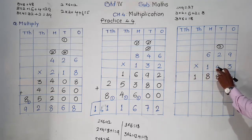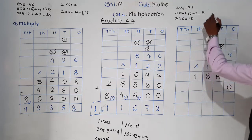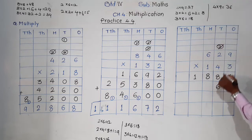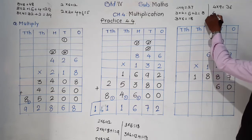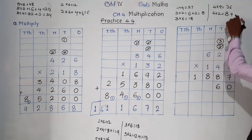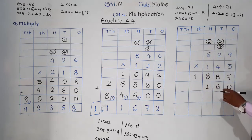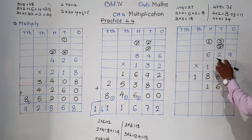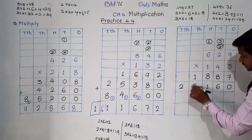Now we are going to multiply by the tens place digit, which is 4. Put 0 in the ones place. 4 nines are 36: 6 comes down, 3 is carried to the tens place. 4 twos are 8 plus carry 3 is 11: 1 comes here, 1 is carried to the hundreds place. 4 sixes are 24 plus carry 1 is 25, written as it is.